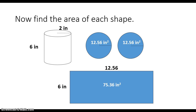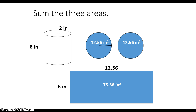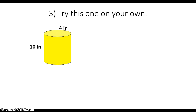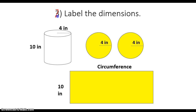Just like when I had rectangular prisms, I simply add up the areas of all the shapes that I have. When I add those all up, I get 100.48 inches squared. Now it's your turn. In the work section of your WSQ — this is number two — go ahead and find the surface area of this cylinder. You may want to draw and label the dimensions first. Pause the video and find the surface area of this cylinder, but when you're done, hit play.